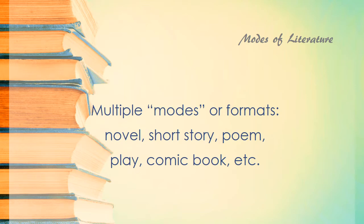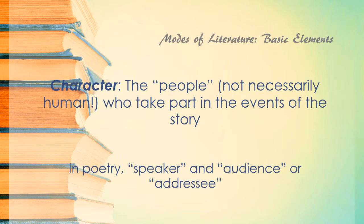That's the way I use it at least. Let's look at the fundamental elements, the basic elements of all literature. Any work of literature is going to have characters, and that's one of the most important elements — the people who take part in the events of the story. The characters are not necessarily human. In poetry we often talk about the speaker rather than character, and the audience or addressee is the other implicit character in a poem. So who is in the story? Who is this about? Who is doing what we see?